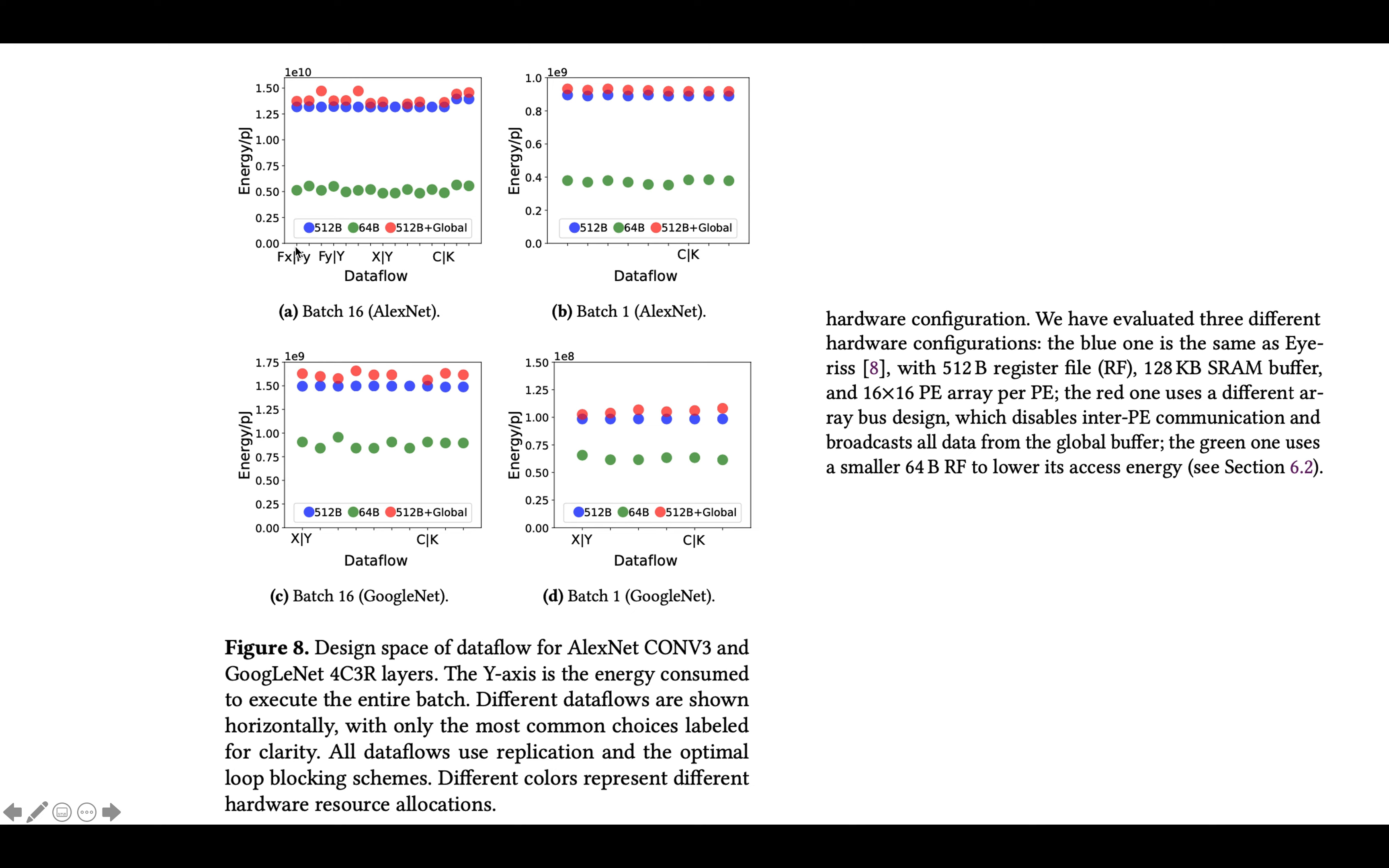And what you can see is that really across many different data flows for a given setup of the memory hierarchy, the energy cost per operation is really extremely similar. So there's some variation, this is a little worse than that, but overall, the different data flows are very close in their energy efficiency. And that's really the punchline from this paper.